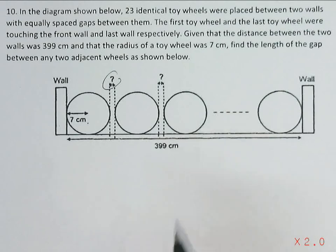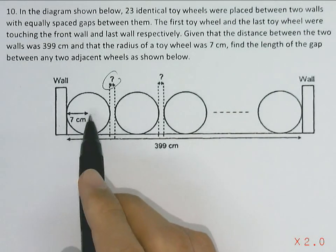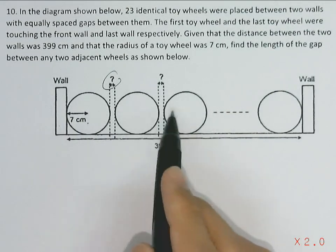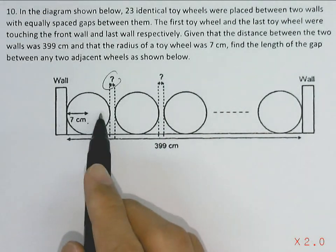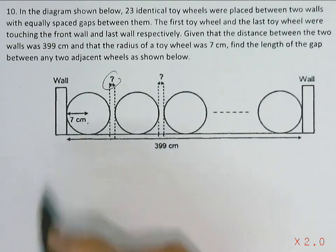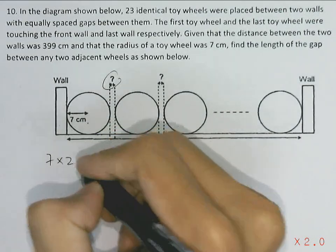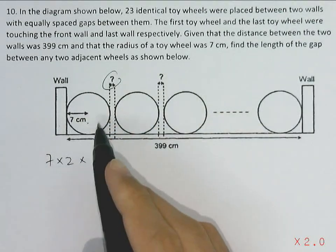First, to find the diameter of a toy wheel, that will be simply 7 cm multiplied by 2. Radius multiplied by 2 gives us diameter. Since there's a total of 23 toy wheels, we will multiply it by 23, which will give us our total distance.